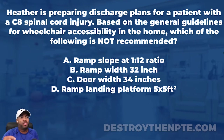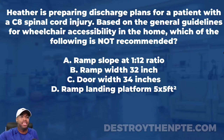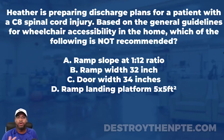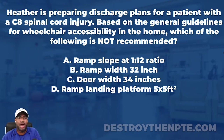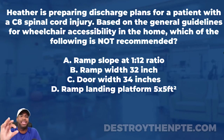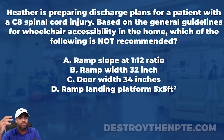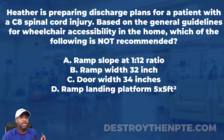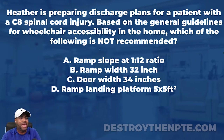As we continue down, it says: based on the general guidelines for wheelchair accessibility in the home. So I'm thinking — if they're talking about general guidelines, what are they really asking? The first thing that comes to mind is ADA guidelines for home accessibility for wheelchairs, which covers door width, ramp length, ramp width — all those things to make the house accessible both inside and outside. That's what we're thinking about: ADA requirements.